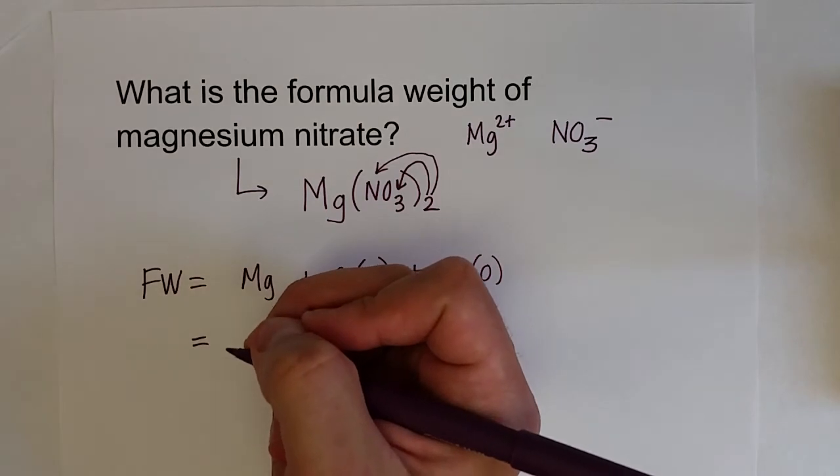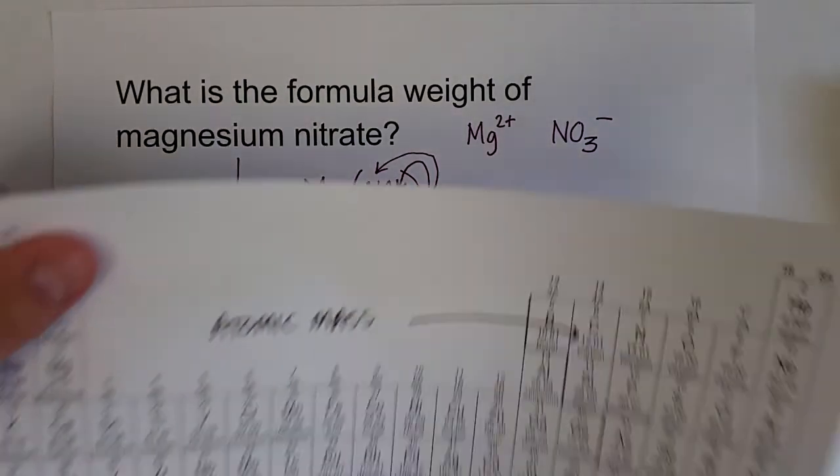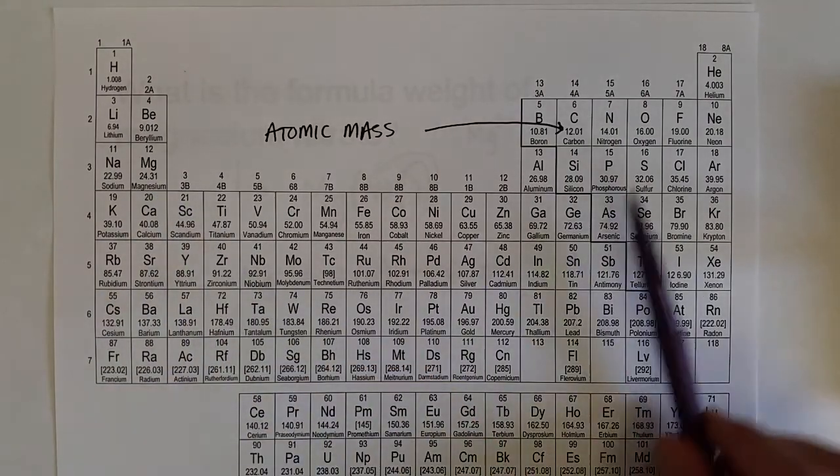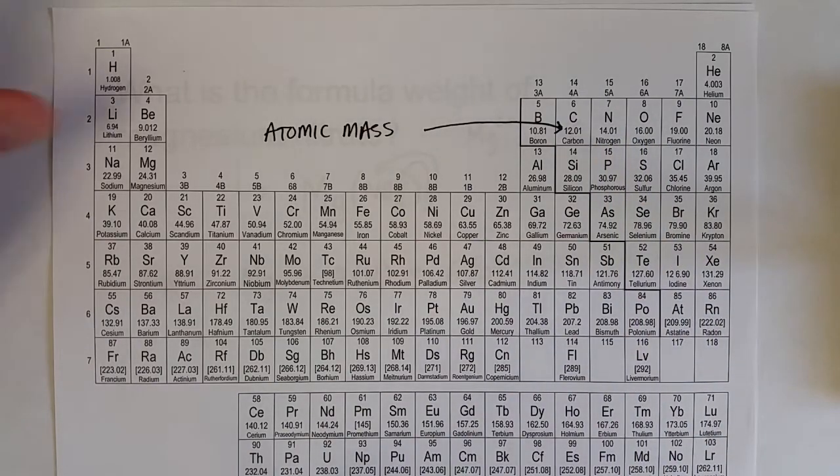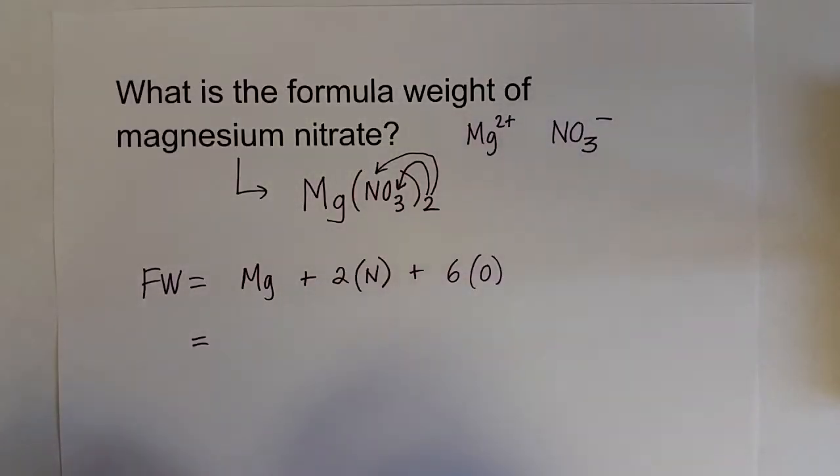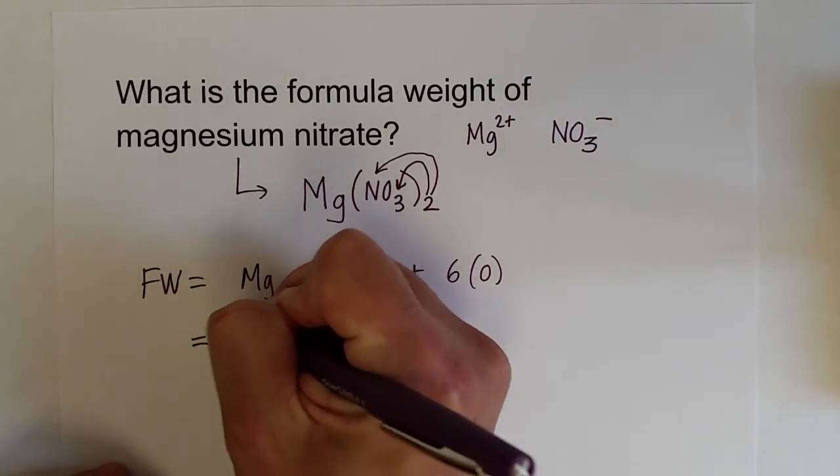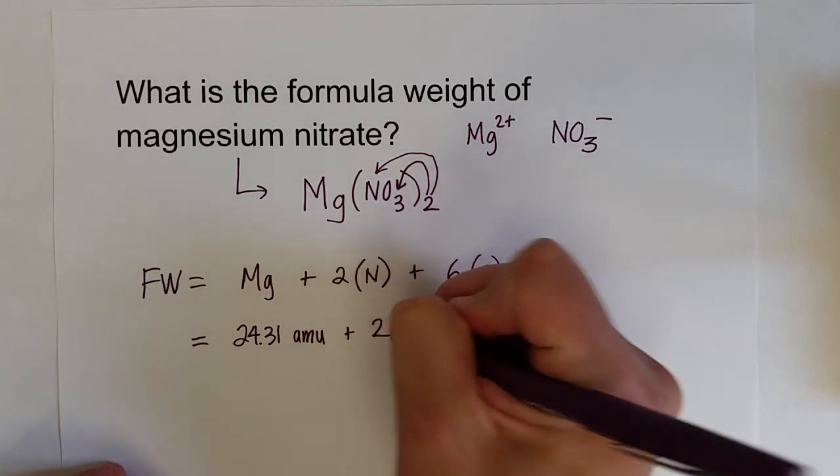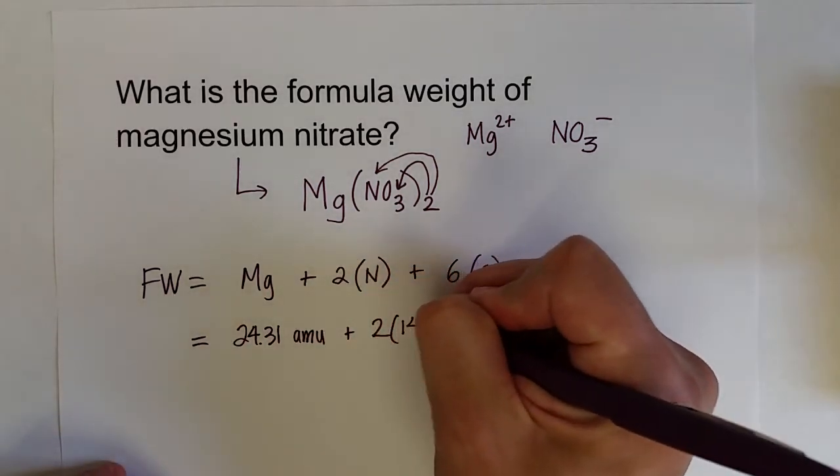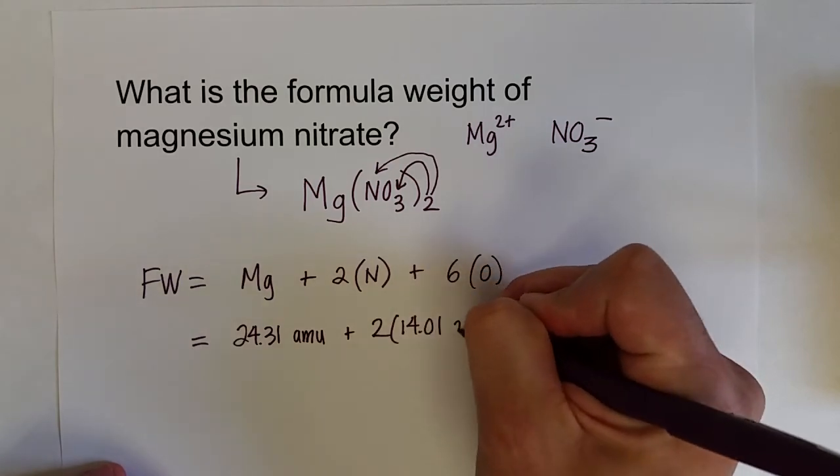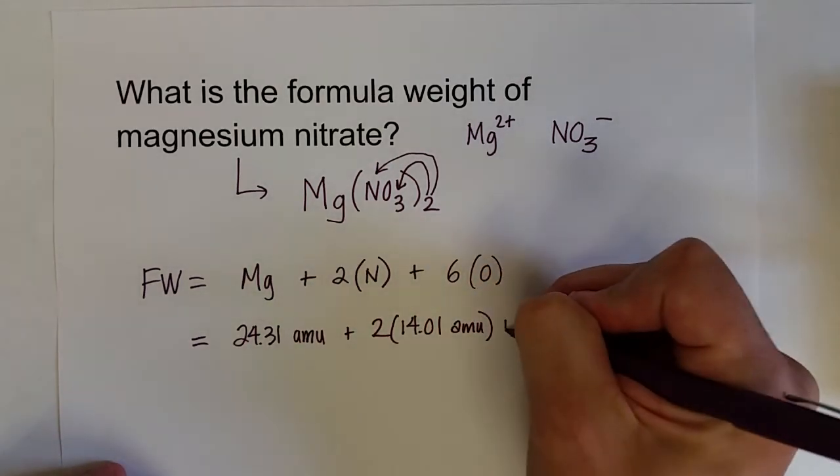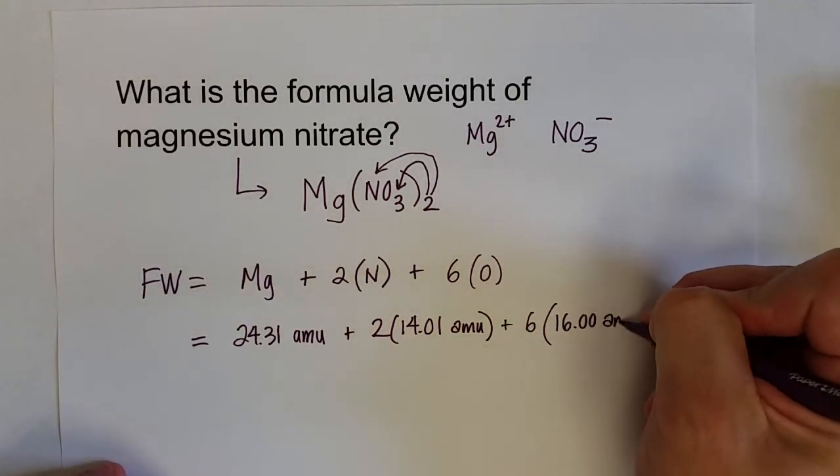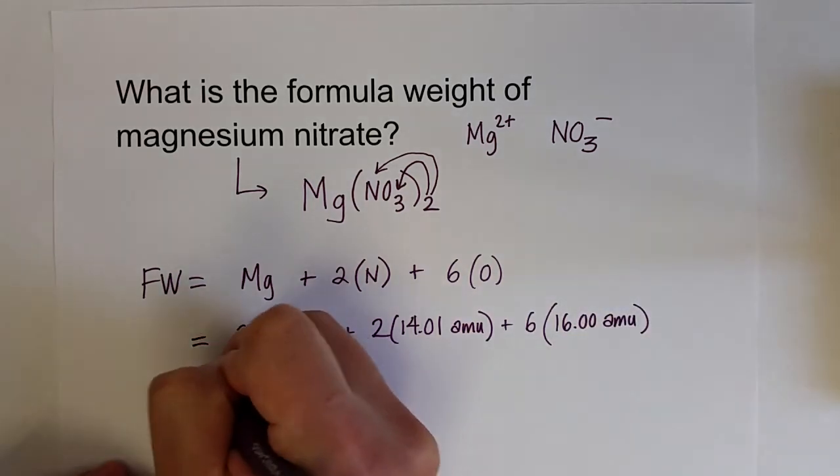We need to go look at the periodic table of elements again. We need to find magnesium, 24.31, nitrogen comes in at 14.01, and then oxygen is still at 16.00. Let's write those down. 24.31 amu, plus two times nitrogen, which was 14.01, plus six times oxygen, which is 16.00 amu.